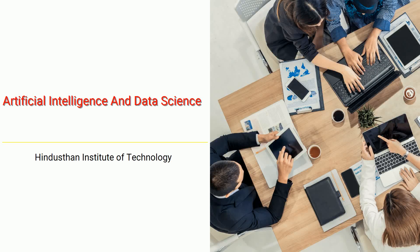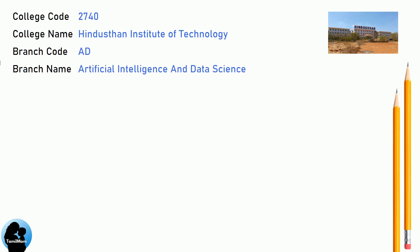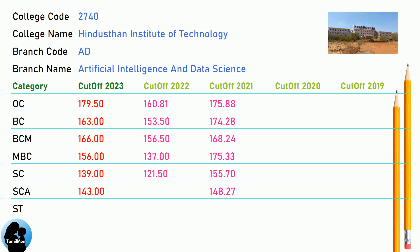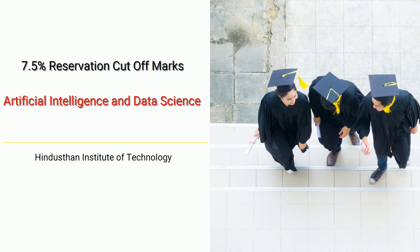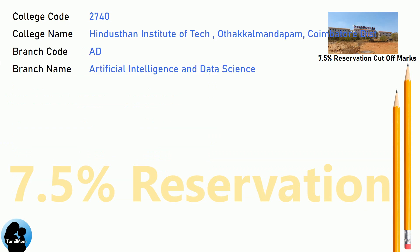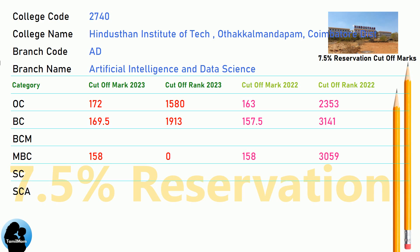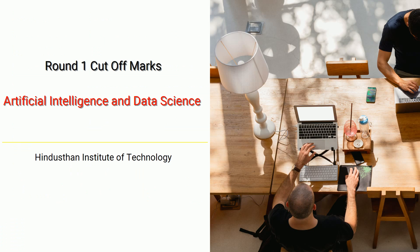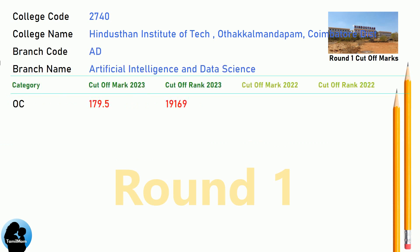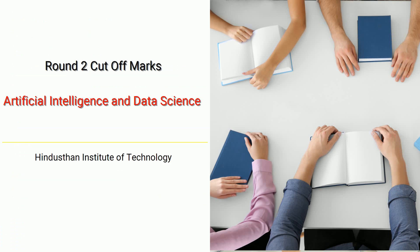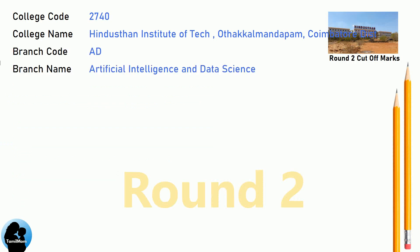DNEA Cut-Off for Hindustan Institute of Technology in Artificial Intelligence and Data Science. DNEA 7.5 Reservation Cut-Off for Hindustan Institute of Technology in Artificial Intelligence and Data Science. DNEA Round 1 Cut-Off for Hindustan Institute of Technology in Artificial Intelligence and Data Science. DNEA Round 2 Cut-Off for Hindustan Institute of Technology in Artificial Intelligence and Data Science.